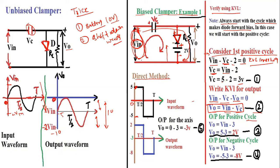For output, we apply KVL in outer loop. The general equation is V_output = Vin - Vc. For positive cycle, Vin = 5V and Vc = 3V, so V_output = 5 - 3 = 2V. For negative cycle, Vin = -5V, so V_output = -5 - 3 = -8V. At origin where Vin = 0, V_output = 0 - 3 = -3V.